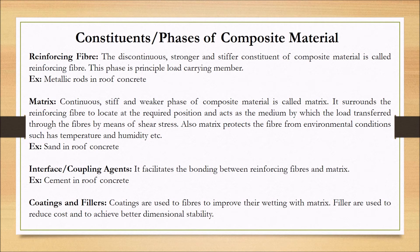The second constituent is matrix. It is the continuous and comparatively weaker phase of composite material. Its function is to surround the fibers and to locate them at the required position and orientation. It also acts as a medium by which loads are transferred through the fibers by means of shear stress. Additionally, the matrix protects the fibers from environmental conditions such as temperature and humidity.